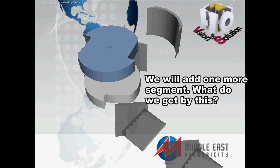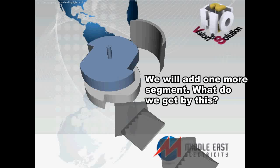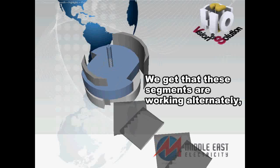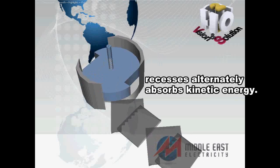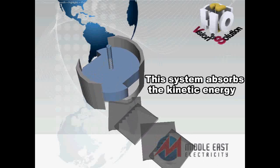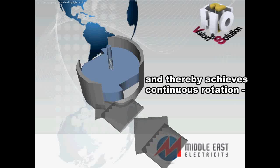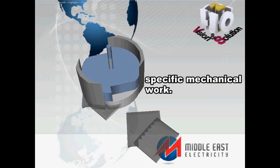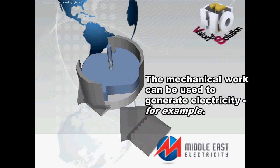We will add one more segment. What do we get by this? We get that these segments are working alternately — recesses alternately absorb kinetic energy. The system absorbs the kinetic energy and thereby achieves continuous rotation, producing specific mechanical work. The mechanical work can be used to generate electricity, for example.